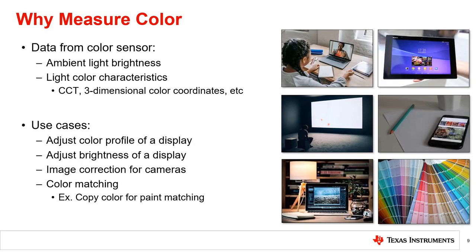With the data from a color sensor, as well as brightness data, display brightness and color performance can be altered. This, in turn, enhances the user viewing experience so that any display is easy to see and correctly projects any image in all lighting conditions. A color sensor can also improve white balancing and image correction for cameras and video recorders, as well as enabling color matching.